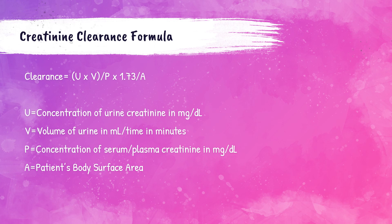When that urine jug comes down to the laboratory, the milliliters of urine in the jug are recorded and put into the computer system, as well as the patient's height and body weight — that's how the computer calculates the patient's body surface area. As medical lab professionals, once the urine creatinine level and the plasma or serum creatinine level are reported into the patient's chart, the computer will do this calculation for you. However, we do need to know how to calculate this without using the computer. So I've put together three practice problems. Let's go to the first one.